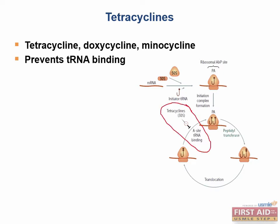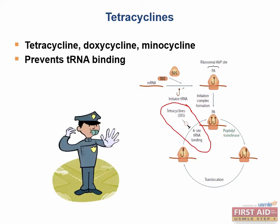Tetracyclines are the first class of drugs we've discussed so far that are bacteriostatic, represented here by a policeman halting with his whistle and putting up his hand. Bacteriostatic drugs do not kill the bacteria like bactericidal drugs, but they halt the replication of bacteria and allow our immune system to catch up with the infection. We will use this police officer to indicate bacteriostatic drugs for the remainder of the lecture.